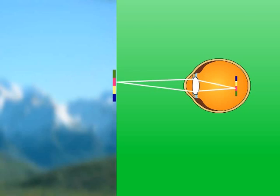With the help of a concave lens of desired focal length, the rays of light converge at the retina and the vision becomes clear.